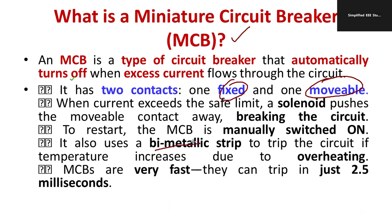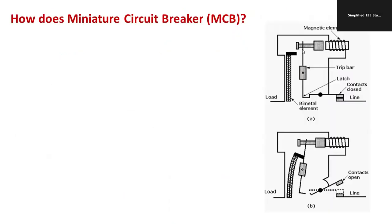In between the contacts, there is a bimetallic strip and a solenoid, which help separate the movable part from the fixed part during unhealthy conditions — that is, during short circuit and overload conditions. Let me take you directly to the diagram so that you can understand the concept very clearly.